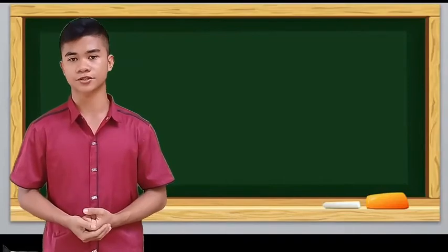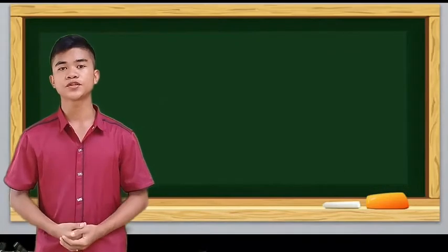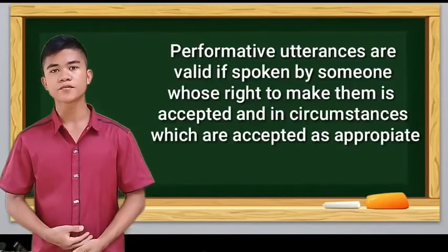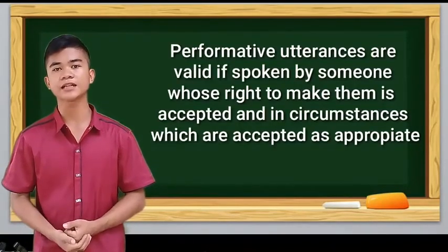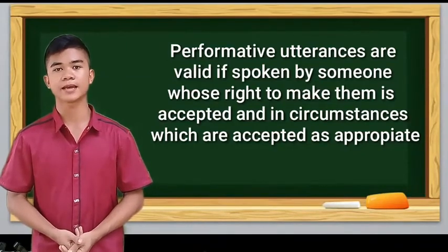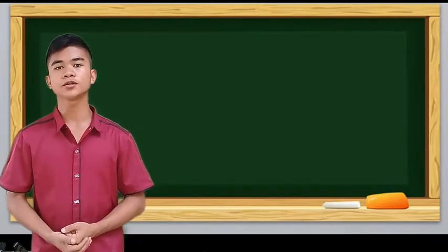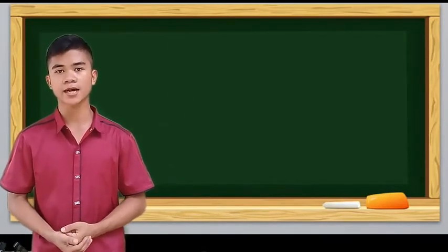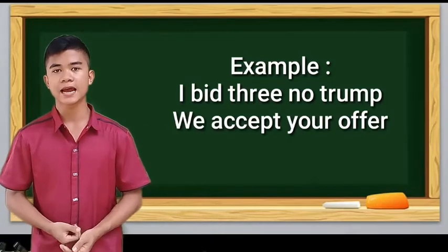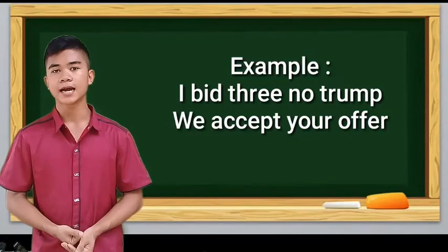The next type is the performative utterance. Speech acts that bring about the status of affairs they name are called performative. Performative utterances are only spoken by someone who has the right to make them accepted. And in circumstances which they are accepted is appropriate, the verbs include bet, declare, baptize, name, nominate, pronounce. Example of the performative utterance is: I bid three no trump. Next is: We accept your offer. I declare this meeting adjourned. So that's all about the performative utterance.